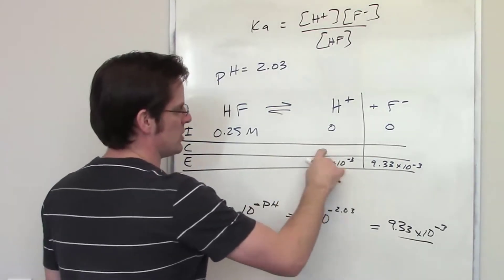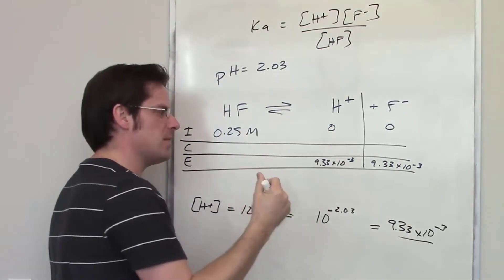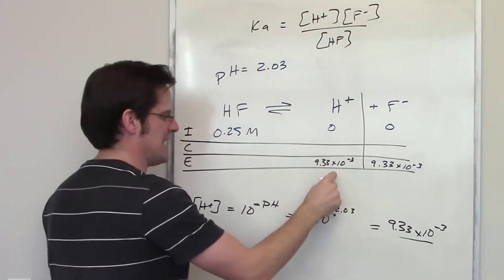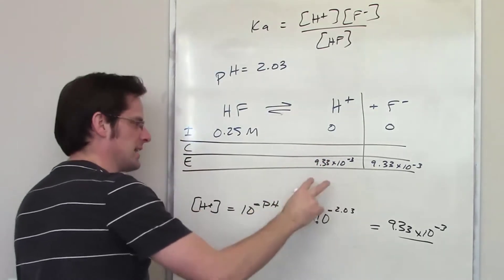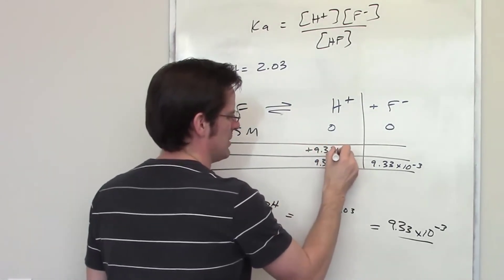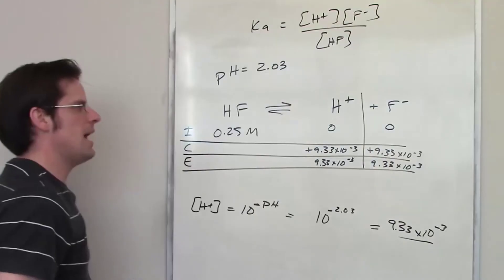Well, I have to determine what the change is going to be. My H plus concentration was 0 at the beginning, and it ends up being 9.33 times 10 to the negative third at the end. So, what was the change? Well, the change was plus 9.33 times 10 to the negative third.